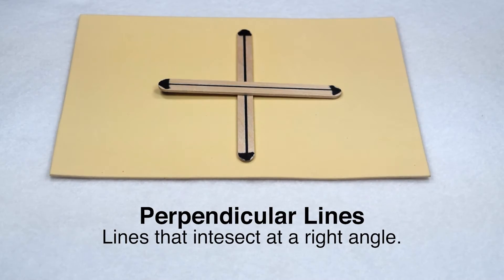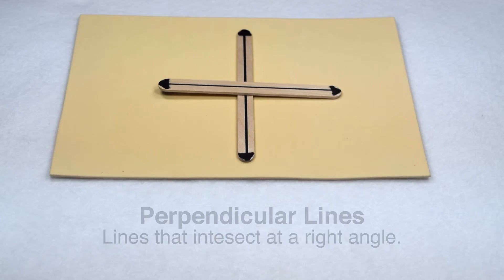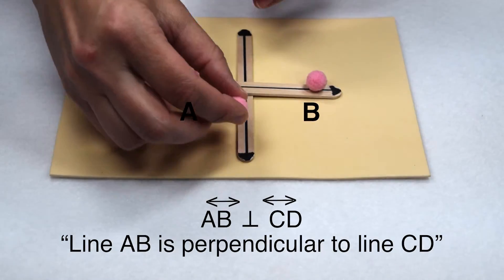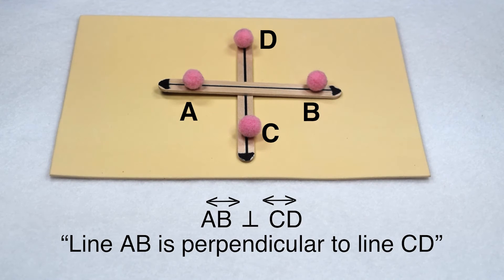Perpendicular lines are lines that specifically intersect at 90-degree angles. So here, we could say that line AB is perpendicular to line CD. Again, we would have a specific symbol that we use between line AB and line CD to show that they are perpendicular.